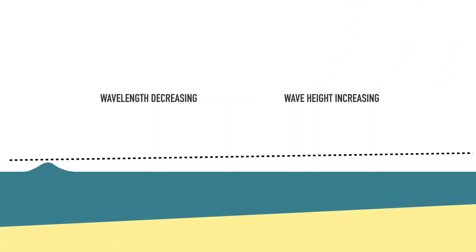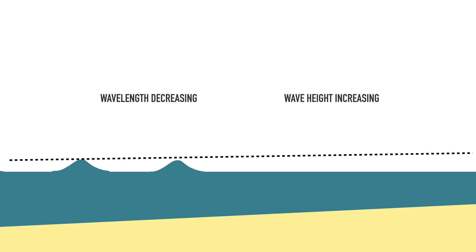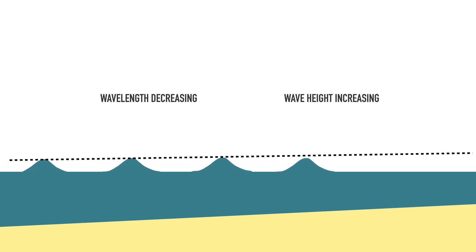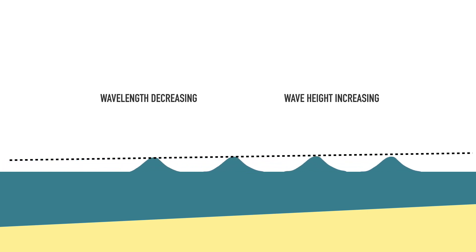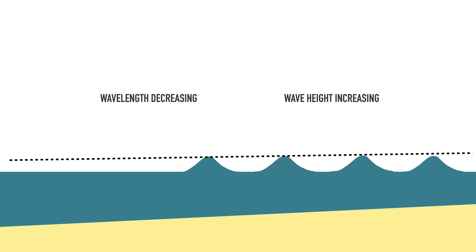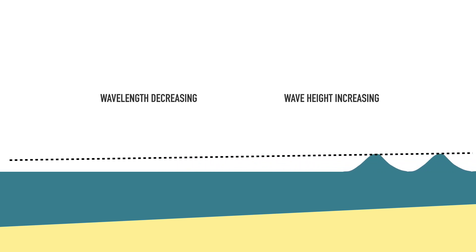As the waves slow down during this process, the wave period remains the same but the wavelength decreases, and as the wavelength decreases the height of the waves increases. This process is known as shoaling and is why the breaking waves at the shore are normally taller than the open ocean swell height.